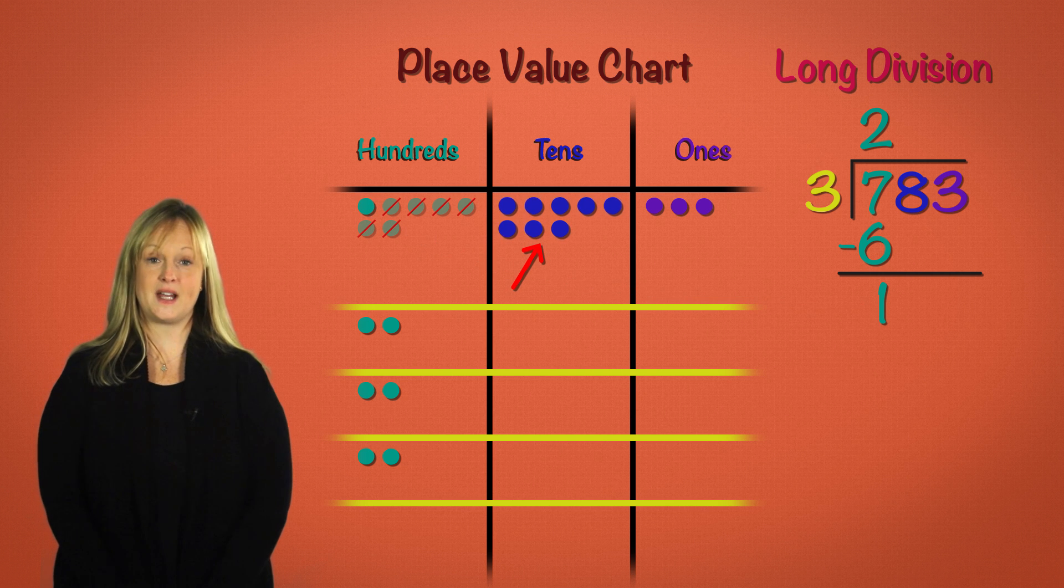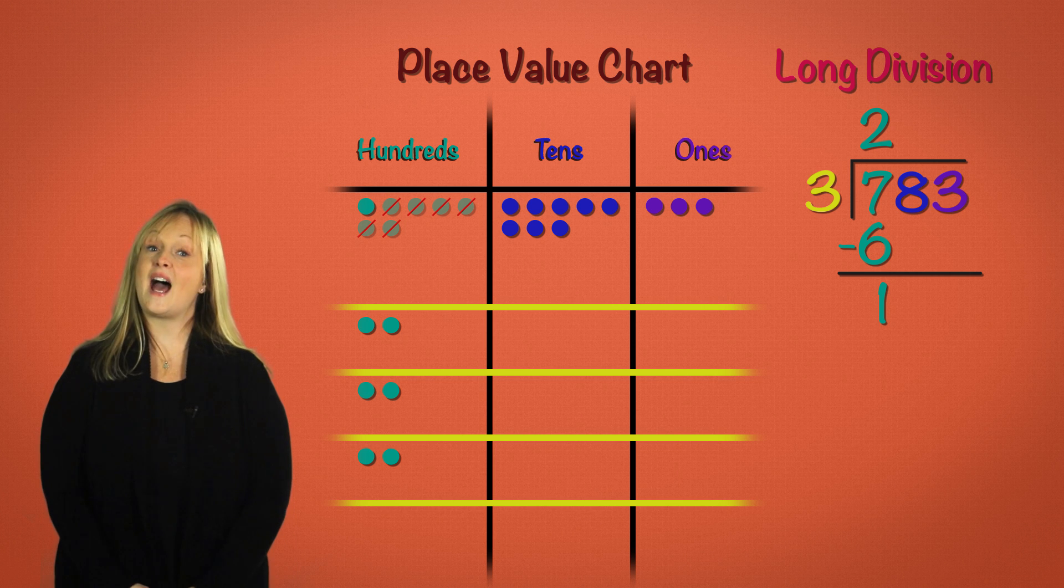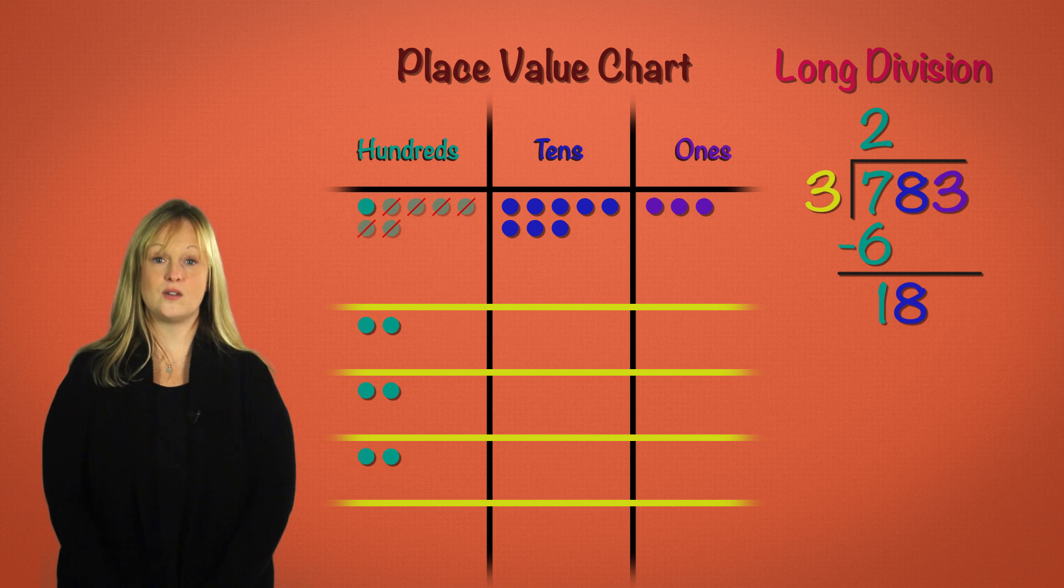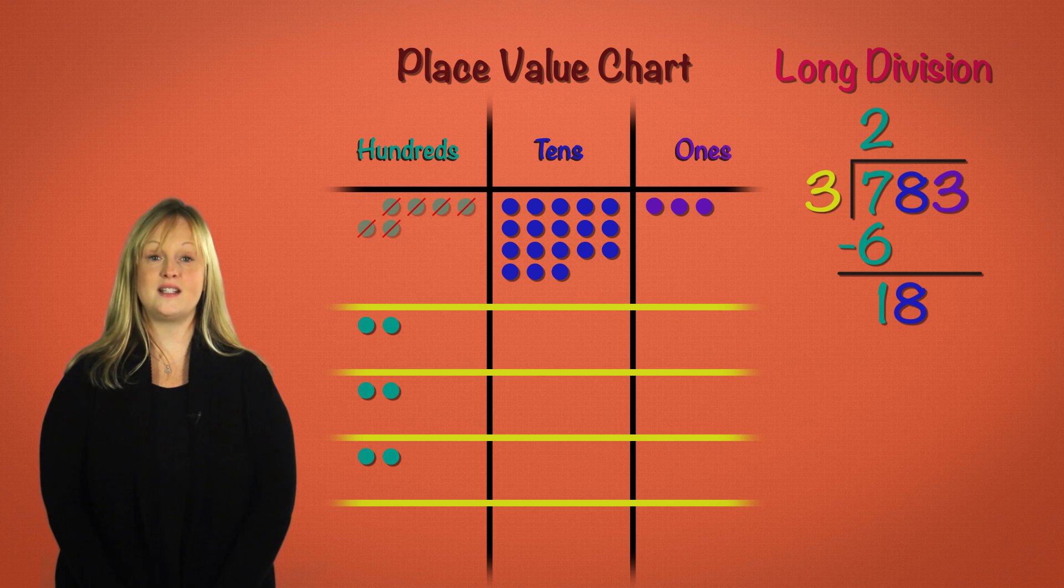Now look at our tens place. How many tens do we still have left to be divided? We have these eight tens here left to be divided. So in our long division sentence, we bring this eight down. Now we have one hundred and eight tens, or eighteen tens. See, in our place value chart, this one remaining hundred disc can be decomposed into ten tens discs. Now we have eighteen tens.